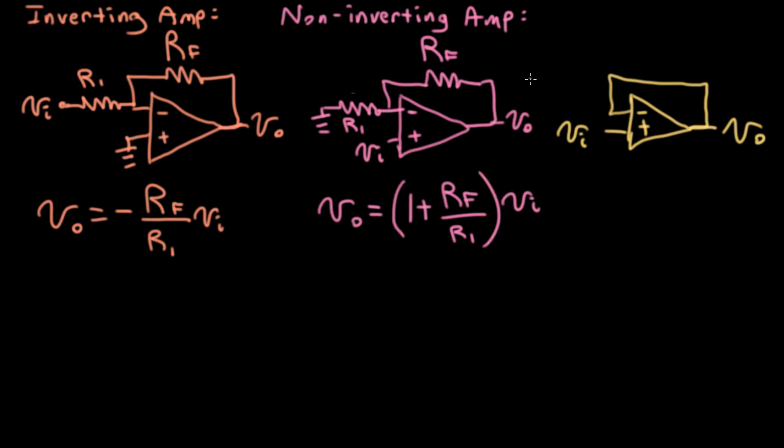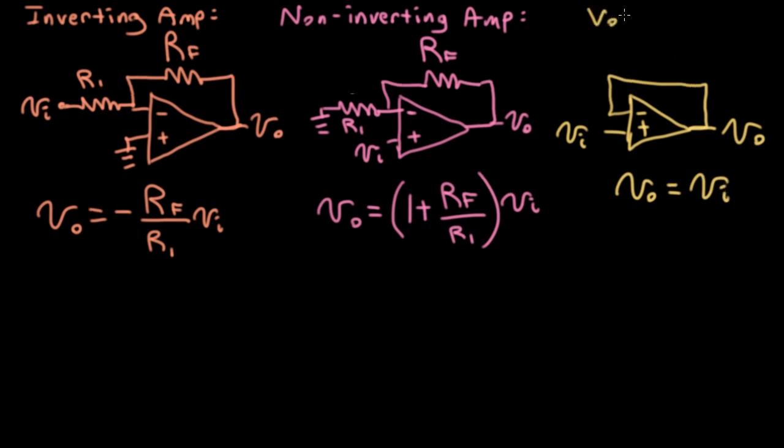Now the circuit on the right here is actually a limiting case of the circuit in the middle. If you let RF equal zero, or you let R1 equal infinity, you wind up with an equivalent circuit where we'll have VO equal to VI. So we'll call the circuit on the right either a voltage buffer or a voltage follower.